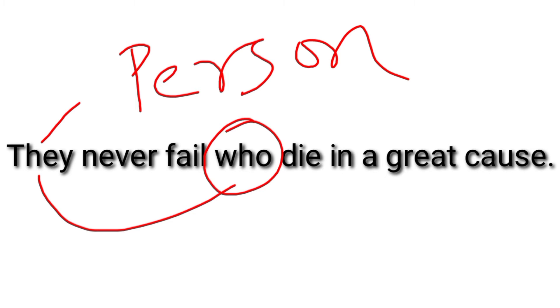Who, whose, and whom are used for persons only. For example: they never fail who die in a great cause. Here we see that who is referring to a person — the noun of the sentence is they.